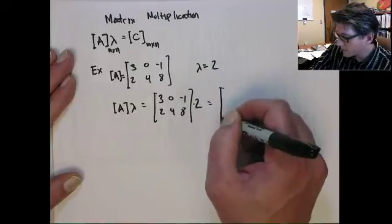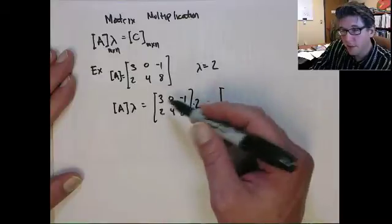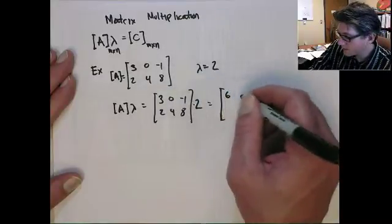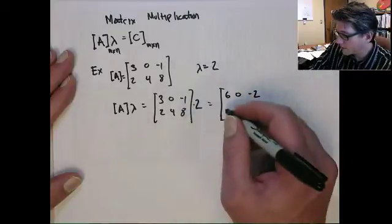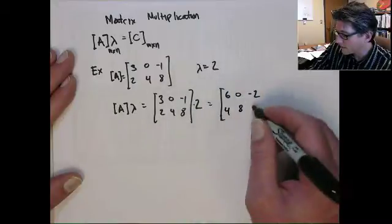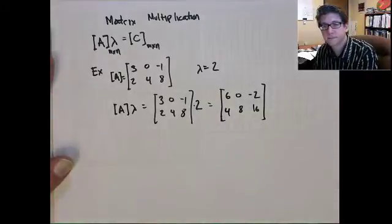It's going to result in the matrix C, which is going to be the same size, a 2 by 3. And we just multiply each entity by 2. So 3 times 2 is 6. 0 times 2 is 0. Minus 1 times 2 is minus 2. 2 times 2 is 4. 4 times 2 is 8. And 8 times 2 is 16. Okay?